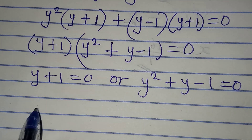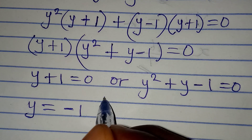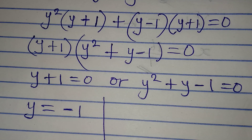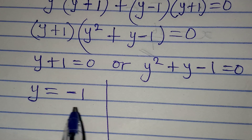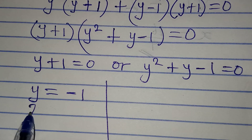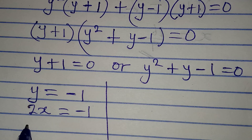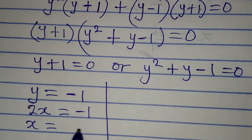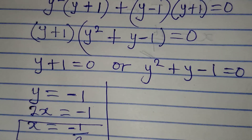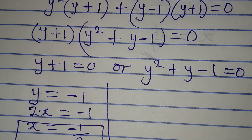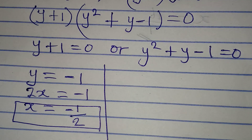We can apply the zero product rule: it is either y plus 1 equals 0, or y squared plus y minus 1 equals 0. From here I have y equal to minus 1. I can find the value of x because y equals 2x, meaning 2x equals minus 1, and x equals minus 1 over 2. This is one of the values of x that will satisfy the given equation.